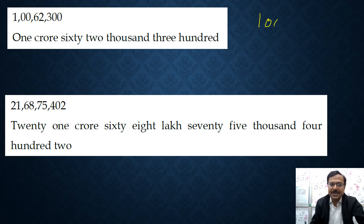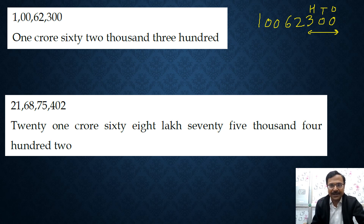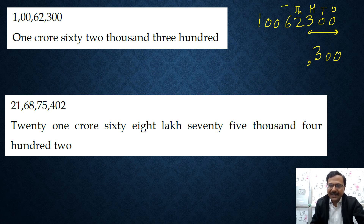Look at the number 10062300. I am talking about the Indian system of numeration. In the Indian system, ones, tens, and hundreds — this triple is always the last group before the first comma, starting from the right-hand side. So 300 will be the last part of the number name, and then we have thousands and ten-thousands, which are coupled together.